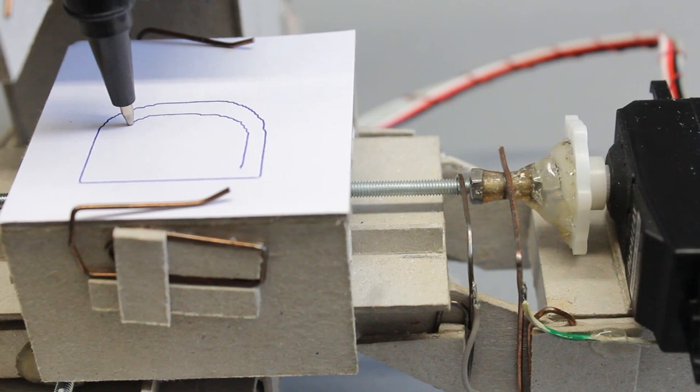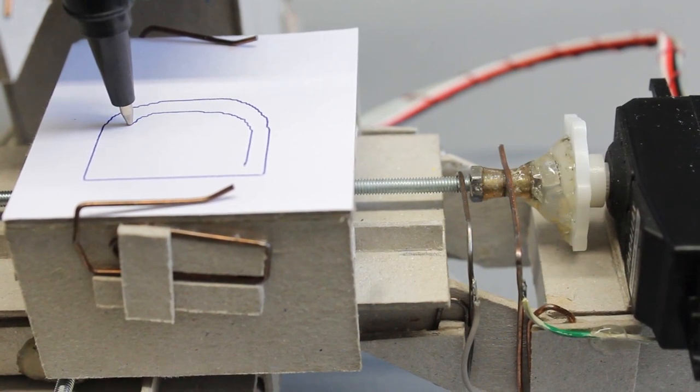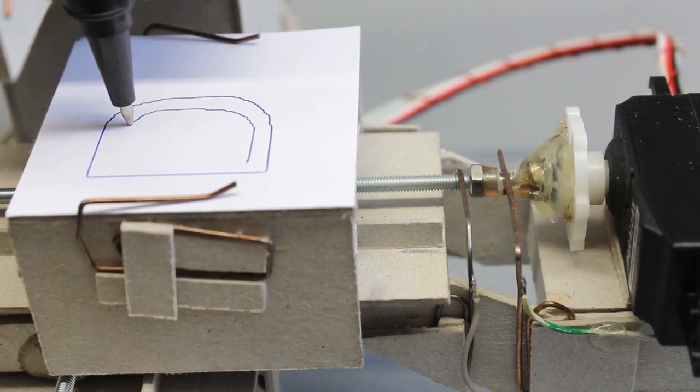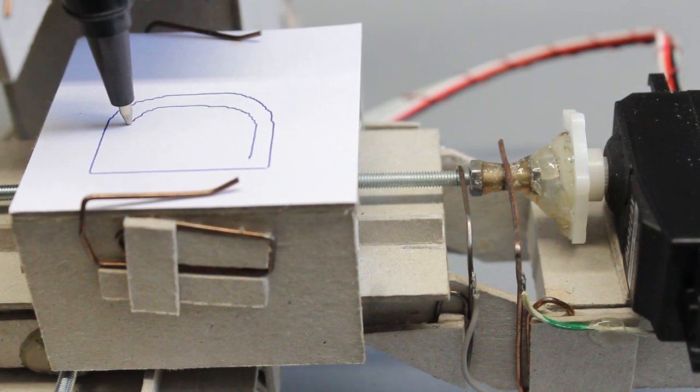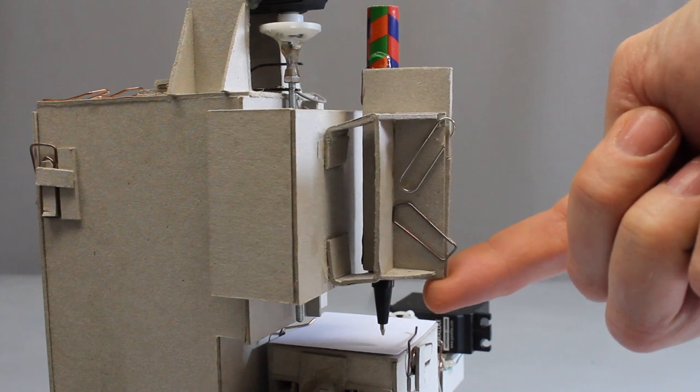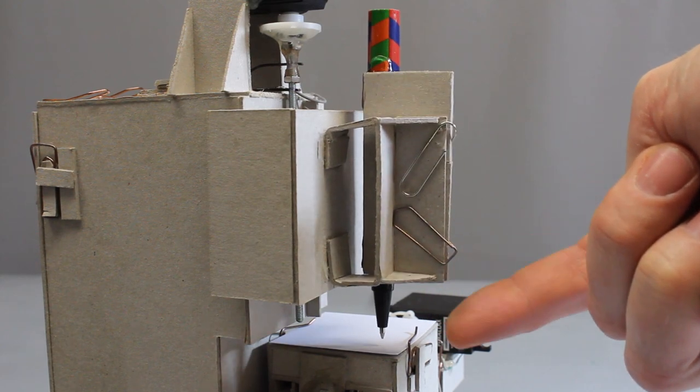Instead of a router that is often used with CNC machines, this one has a ball pen. It is working as a plotter. The pen is attached flexibly to the vertical axis.